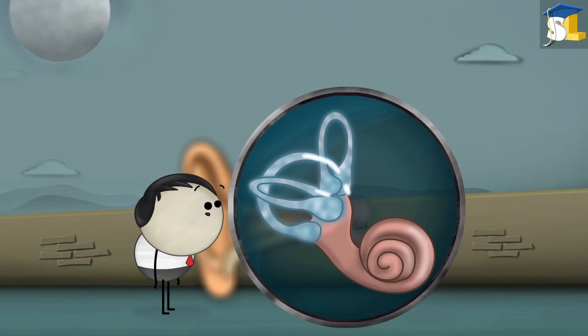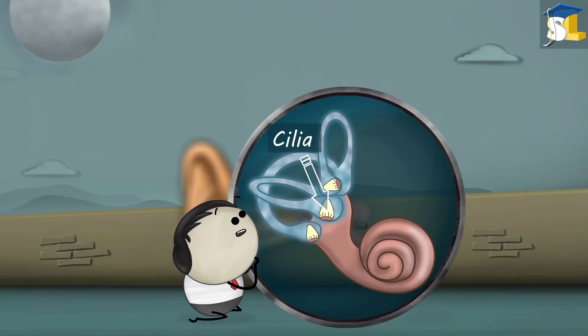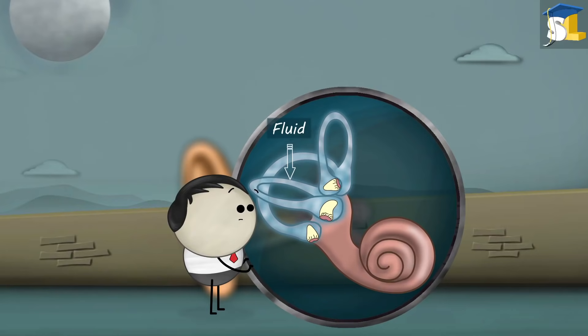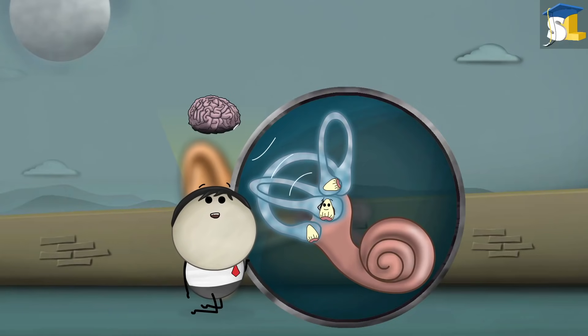Each of these canals has a fluid called endolymph and hair cells called cilia at the base. Whenever we move our head, the fluid moves, resulting in the movement of the cilia as well. When the cilia moves, it sends signals to the brain informing which direction our head has just moved in.